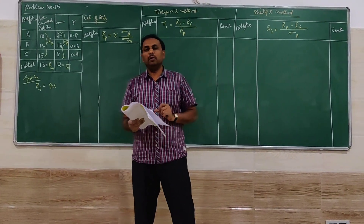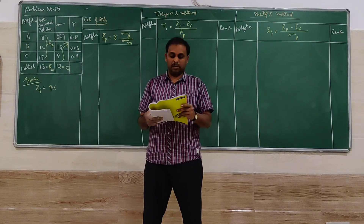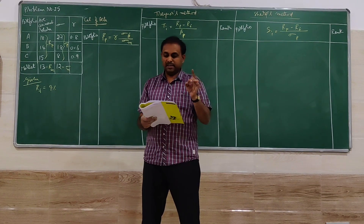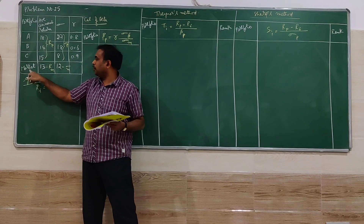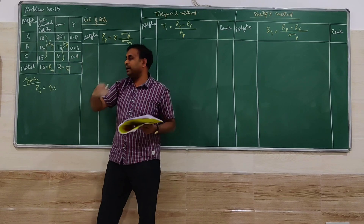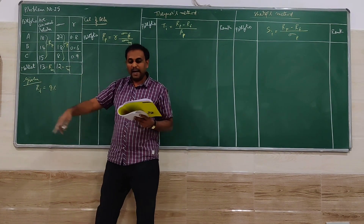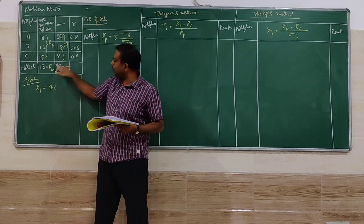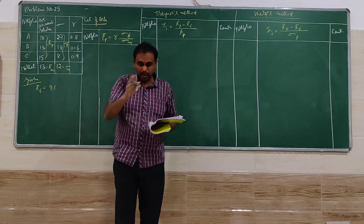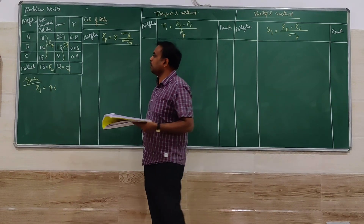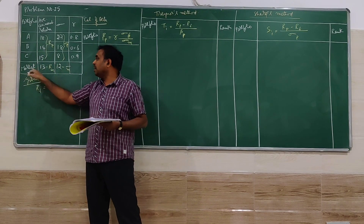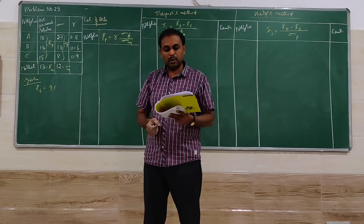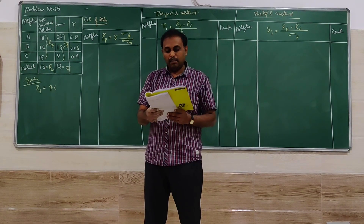This problem is connected to portfolio analysis using particular methods and theories. The following table gives information about three portfolios — A, B, and C — and the market. It includes average annual return of each portfolio and the market, standard deviation of each portfolio and the market portfolio, and coefficient of correlation. The market can be specified as BSE or NSE, or generally given as 'market.'